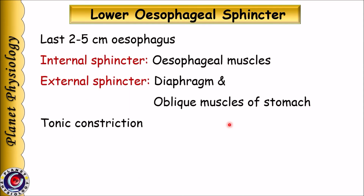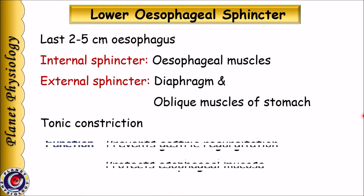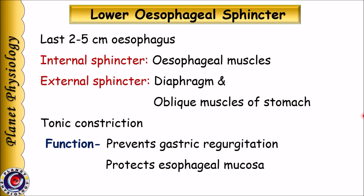Thus the lower esophageal sphincter is made up of circular smooth muscles, diaphragmatic fibers, and oblique muscles of the stomach. Under normal situations, this sphincter is tonically constricted and relaxes only when bolus is received. This prevents gastric regurgitation — that is, backward movement of food material from stomach to esophagus.